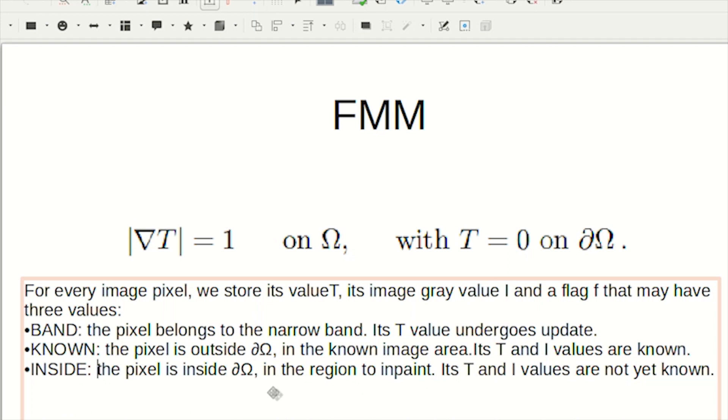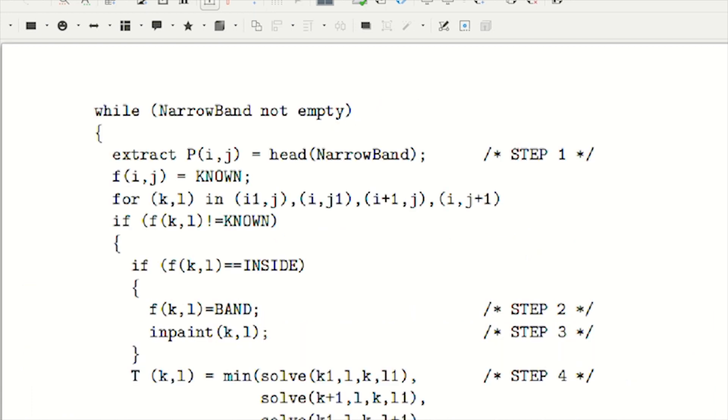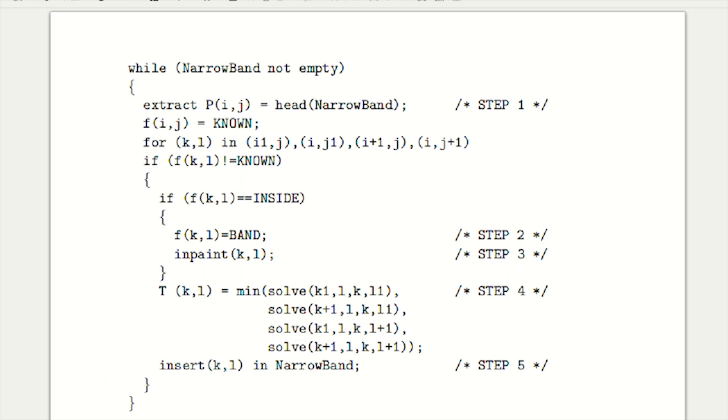First, we set T to zero on ∂Ω, the boundary of the region to inpaint, and set a large value inside. We initialize F over the whole image as explained, then insert all BAND points into a heap. There's something called the narrow band—this narrow band is our boundary ∂Ω, sorted in ascending order of T values.